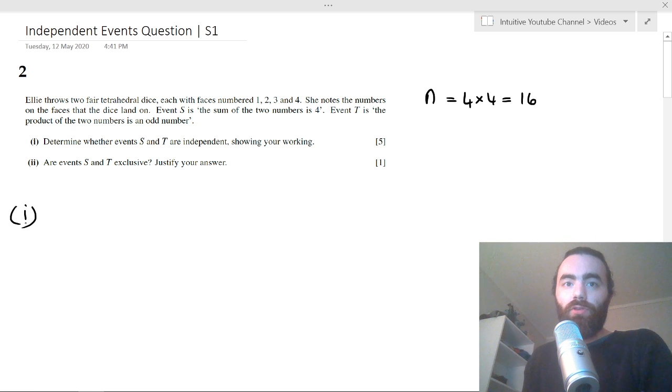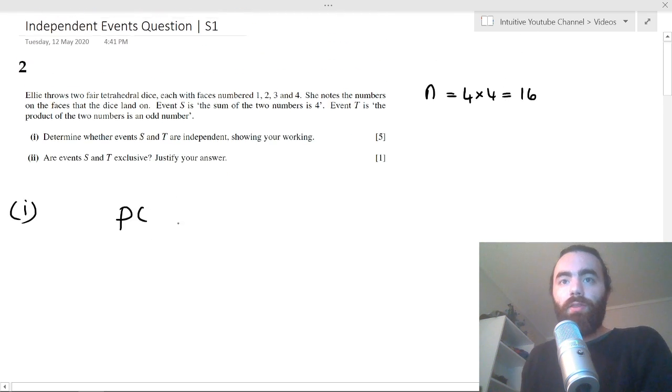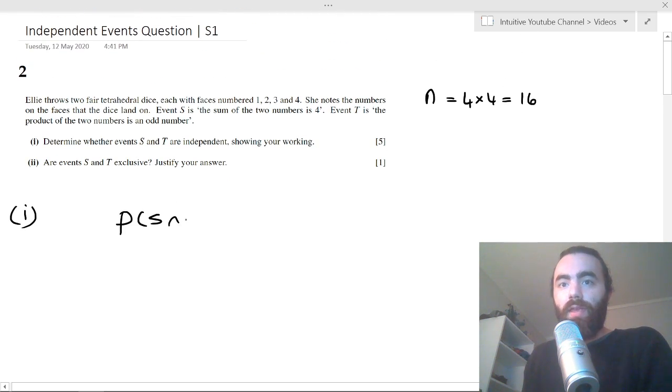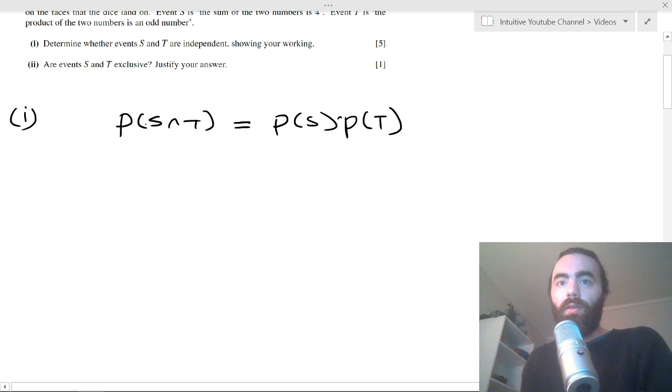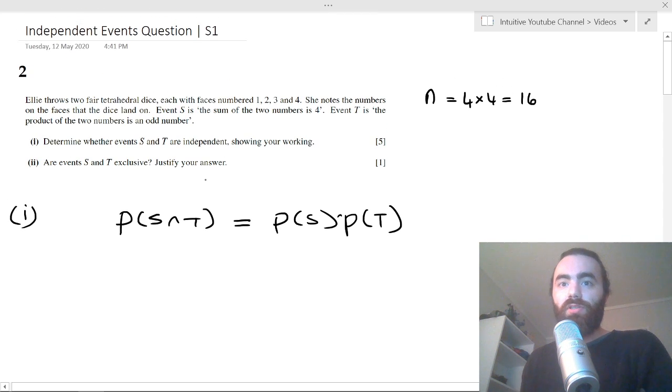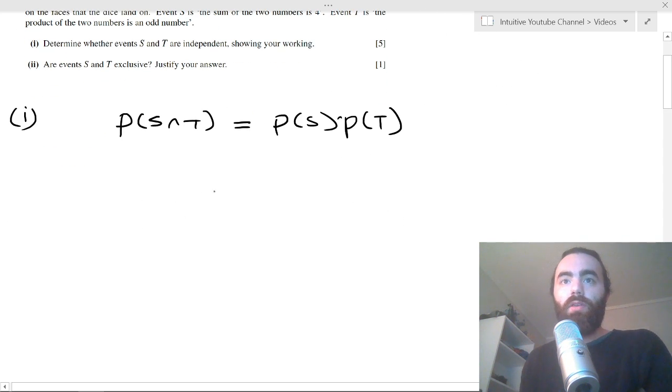And it says determine whether events S and T are independent. Well, what we have to do is to determine whether S and T are independent events, we have to find the probability of S and T occurring simultaneously. And we have to see if that's equal to the probability of S occurring times the probability of T occurring. If this probability equals P(S) times P(T), then the events S and T are independent. If they're not equal, then they're not independent. So we just have to find all of these things individually.